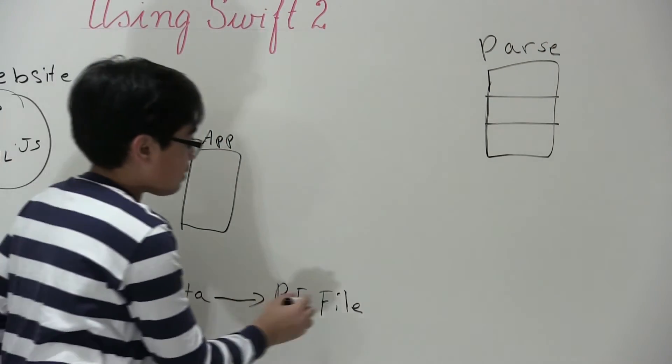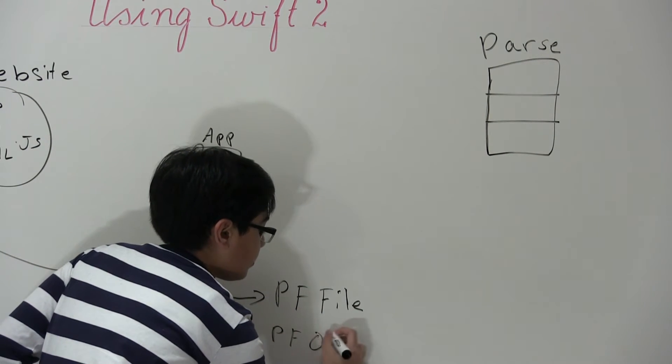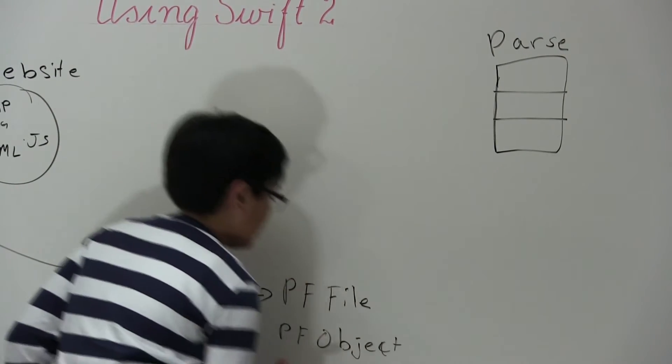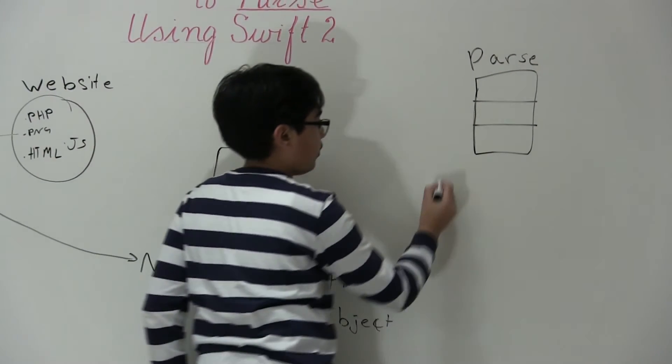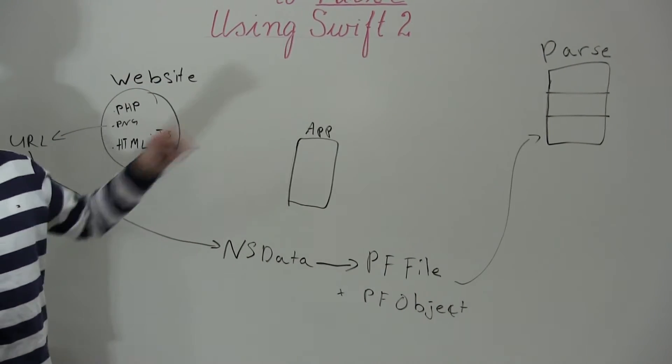This is our backend. Let's just say this is our database and this is labeled as parse. Now we're going to take this PFFile along with some PFObjects.